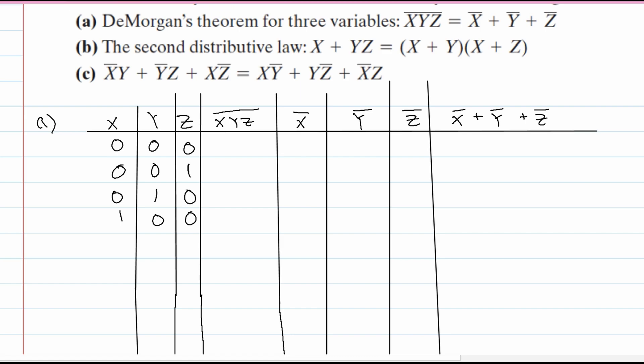Next, we start again from the right: one, one, zero. Then we go one, zero, one. Then back on the left, we have one, one, zero. And lastly, we have one, one, one. So from here we can see that we have eight different possibilities in total.